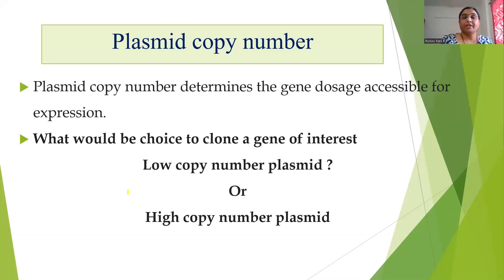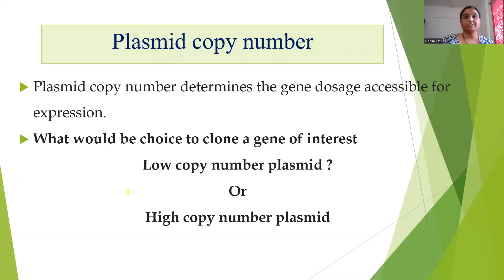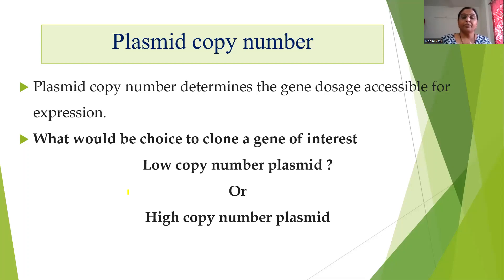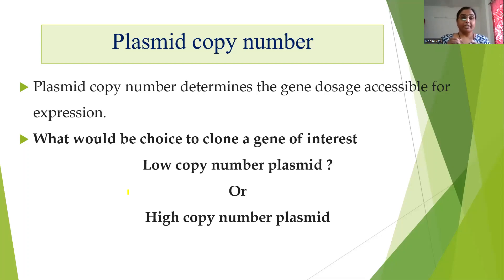Plasmid copy number — what do we mean by plasmid copy number? The number of plasmid molecules present in a given bacterial cell is called the plasmid copy number, or the number of origins of replication of the plasmids present in a bacterial cell. According to the plasmid copy number, plasmids are classified as low copy number, medium copy number, and high copy number plasmids.